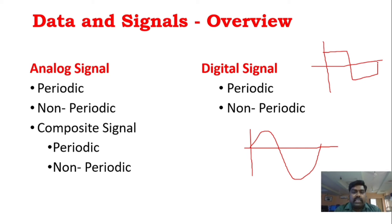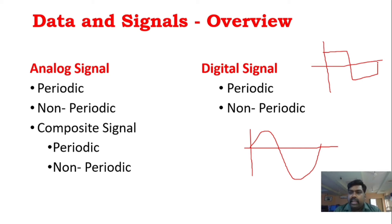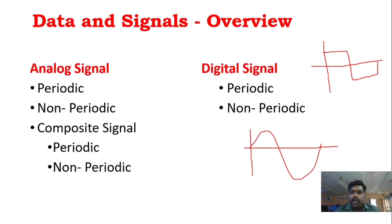Analog signal is a continuous waveform. Discrete signals — on the path you can see discrete sets of signals. So discrete signals are represented by a square wave.